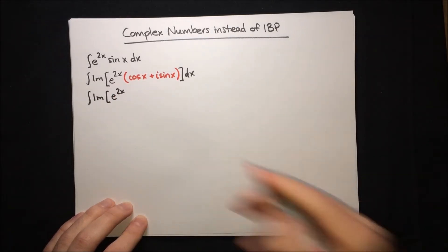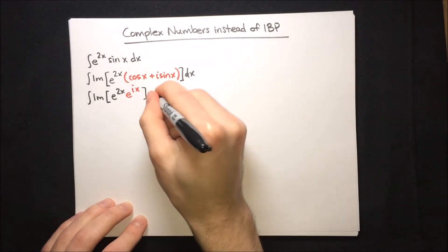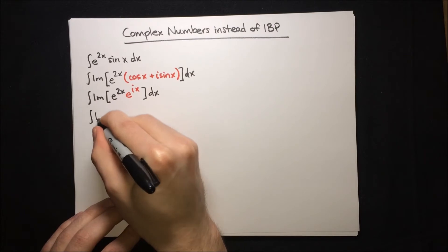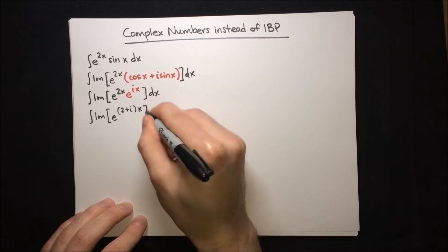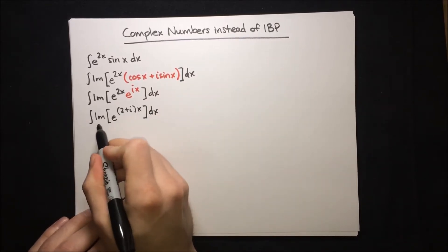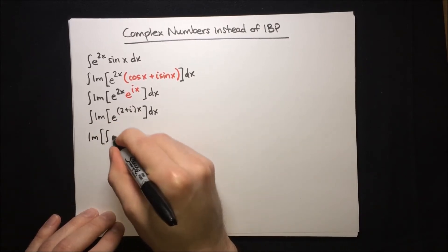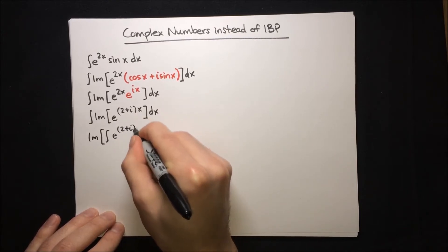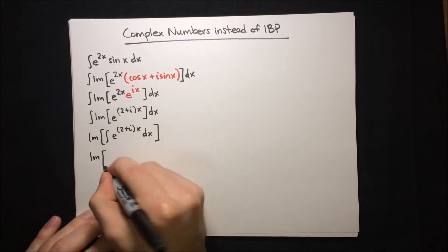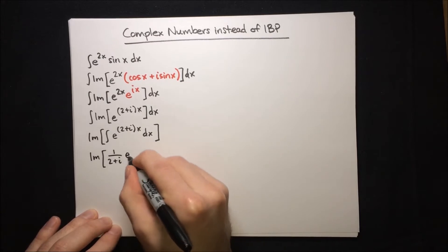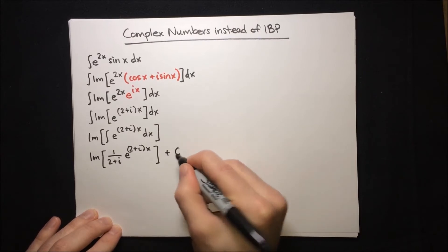So that's e to the 2x times e to the ix. And then we can simplify it a little bit more by multiplying through — it's the imaginary part of e to the (2 + i)x dx. Now we can bring the imaginary operation outside of the integral. It's the imaginary part of the integral of e to the (2 + i)x dx. And we can go ahead and evaluate the integral: it's the imaginary part of 1 over (2 + i) times e to the (2 + i)x, plus c at the very end.